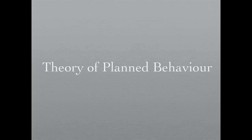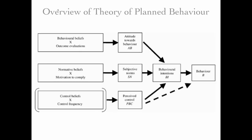This theory predicts that someone's intention — so whether I intend to perform a behavior — very strongly predicts whether I actually perform that behavior. So if I make an intention to exercise and go to the gym, I'm very likely to actually do it. Whereas if I don't make that intention, it's very unlikely I'll actually perform that behavior.